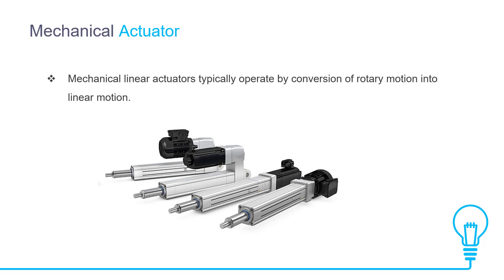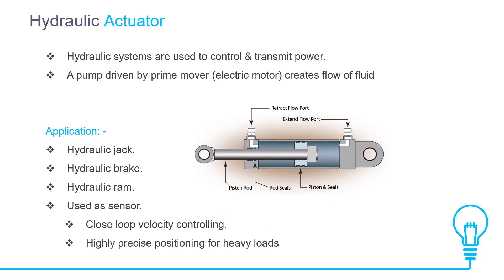Hydraulic actuators have a cylinder or fluid motor that uses hydraulic power to generate mechanical motion, which in turn leads to linear, rotatory, or oscillatory motion. An example is a pump driven by a prime mover — an electric motor — that creates a flow of fluid. Hydraulic actuator applications include: hydraulic jack, hydraulic brake, hydraulic ram, use as a sensor, closed-loop velocity controlling, and highly precise positioning for heavy loads.